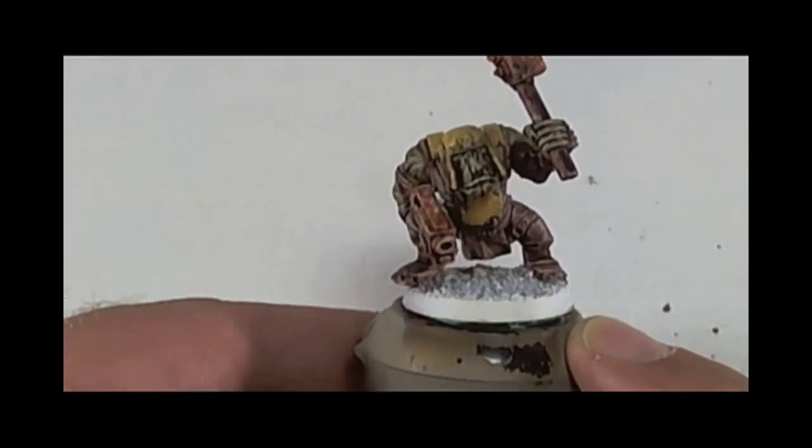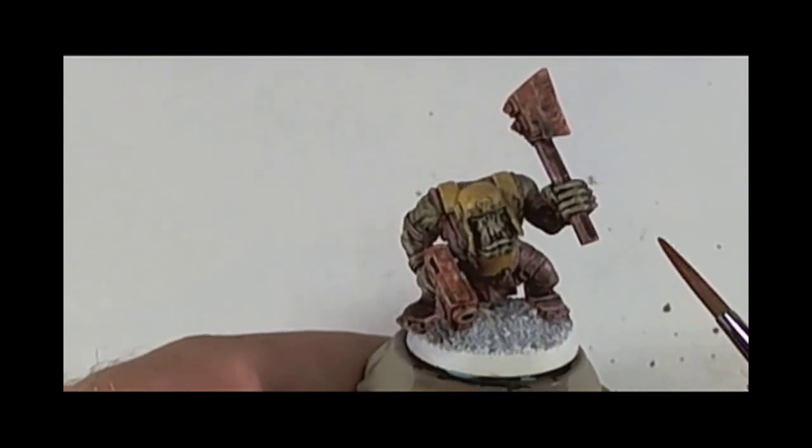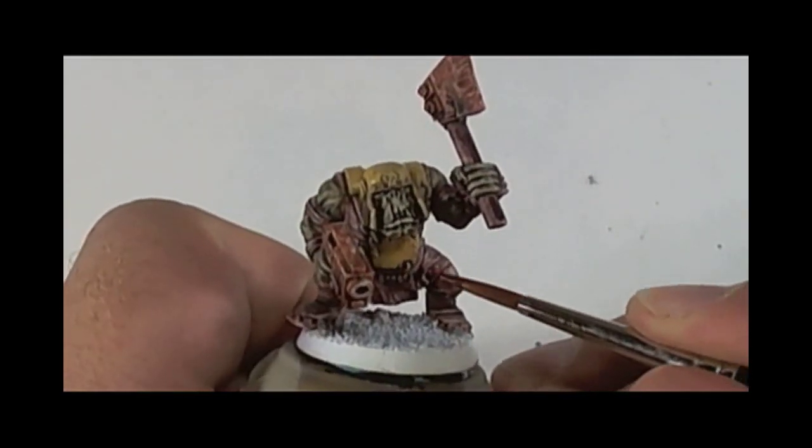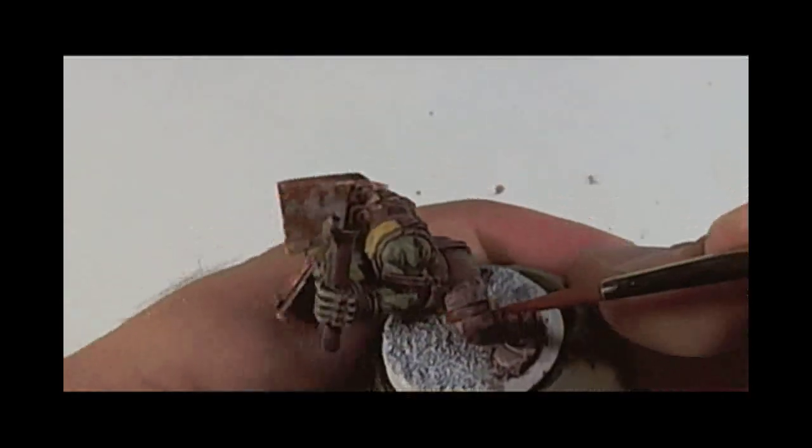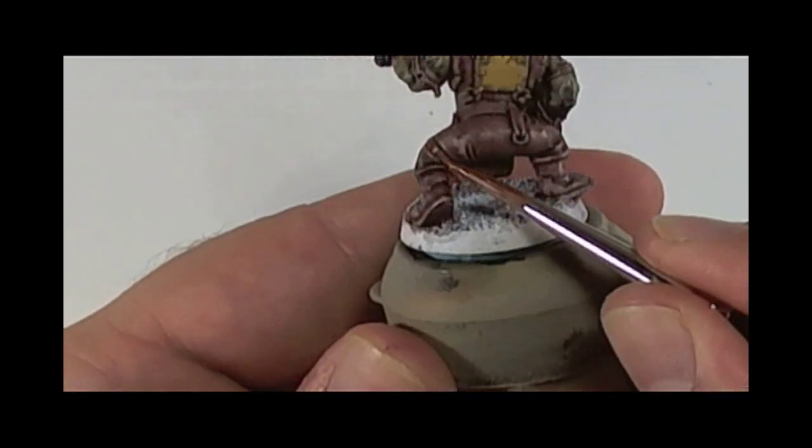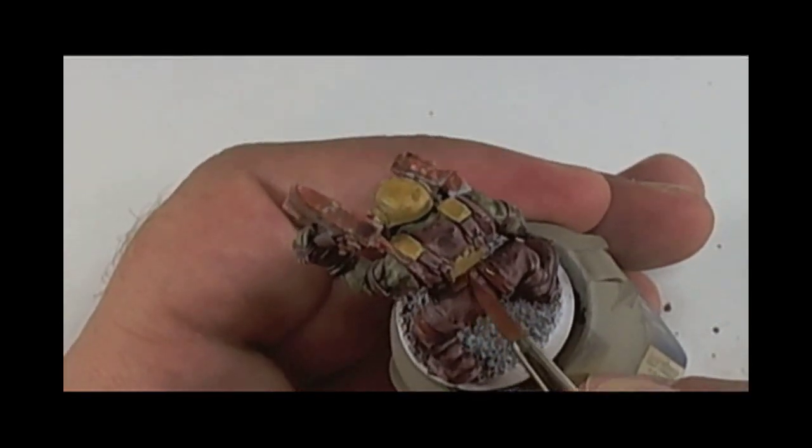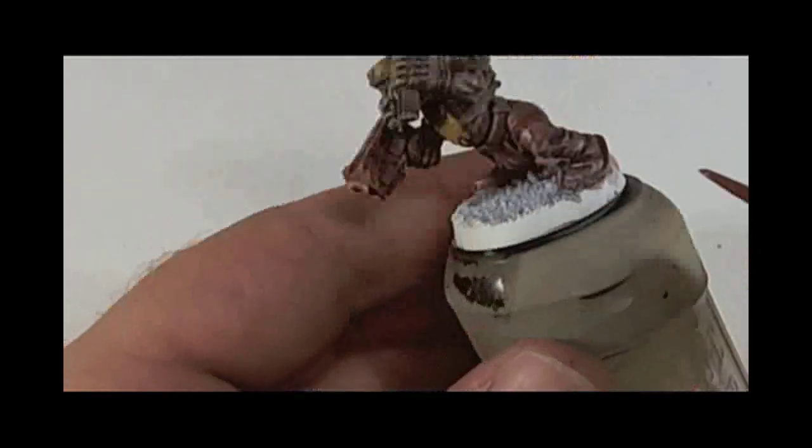Okay, so once this dries, we use Bistro brown and we paint the weapon handle, all the straps, we highlight the cloth, and any details like the belt that we want to pick out from the scorched brown.